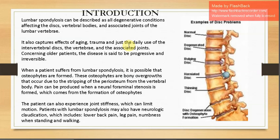Lumbar spondylosis is described as a degenerative condition affecting the disc, vertebral bodies, and joints of the lumbar vertebrae. Age, trauma, and daily use of the intervertebral disc, vertebrae, and associated joints — that is, repetitive daily activities — are thought to be responsible, the same as we have seen in cervical spondylosis. In lumbar spondylosis, osteophytes are the main finding.